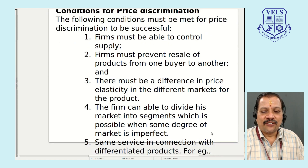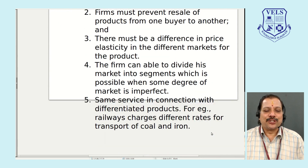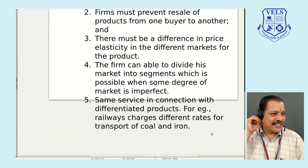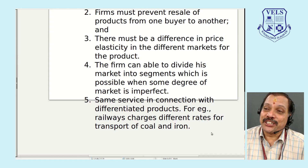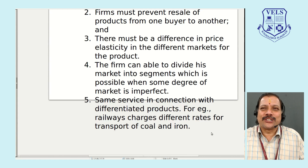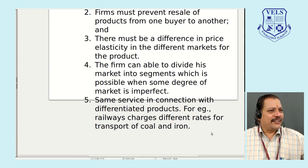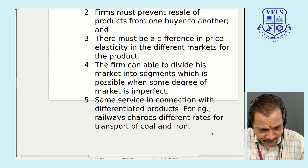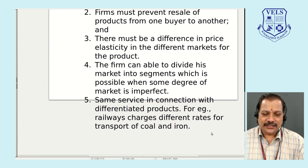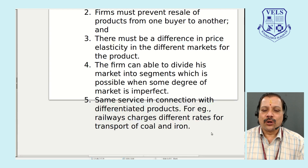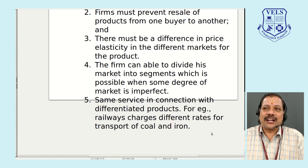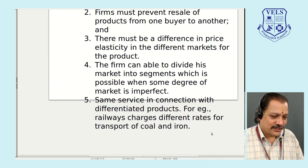The fifth condition is that the same service can be used in connection with different differentiation — for example, railways charge different rates for the transport of coal versus iron; passenger trains have different tariffs from goods trains. So the price discrimination changes based on the type of use and product differentiation. These are all the conditions for price discrimination.